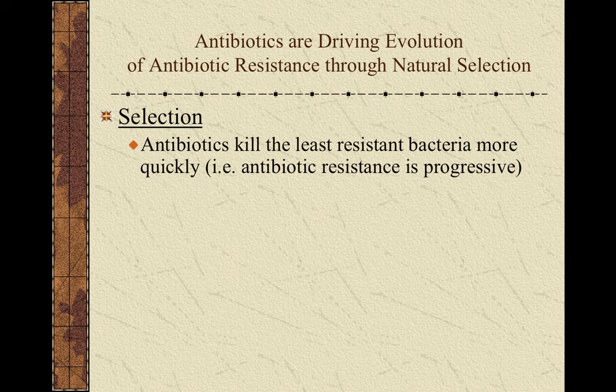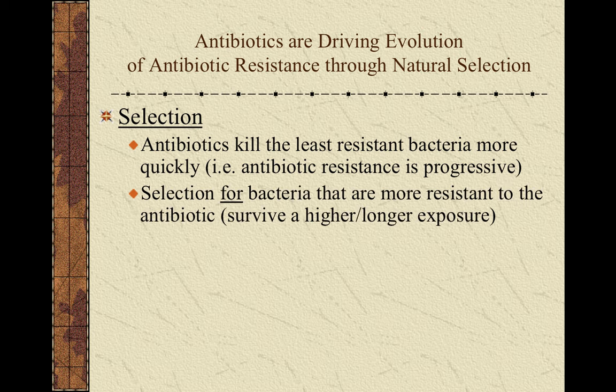In the process of selection — that is, when the bacteria are exposed to antibiotics — the least resistant bacteria are going to die the soonest. Antibiotic resistance is what we call progressive: it's not all or nothing like a light switch. It is possible for bacteria to be more or less resistant to a particular antibiotic. The weakest bacteria will die first, but gradually, if bacteria are exposed to more and more antibiotics for a long enough period of time, the stronger bacteria will eventually be killed too. The more resistant bacteria can survive a higher dose of antibiotic for a longer period of time.